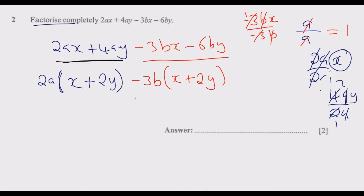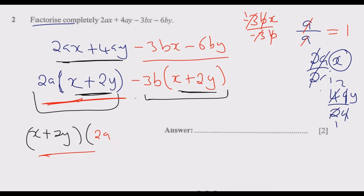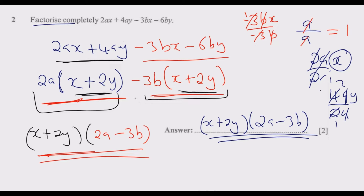What is key here is ensuring that the expressions inside both brackets are the same. If they are not the same, you've made a mistake — check your workings. At this point it is much easier: (x + 2y) is common to both groups. Factoring it out, we remain with 2a from the first term and −3b from the second. So the final factorized answer is (x + 2y)(2a − 3b). Once you do that you get the two marks.